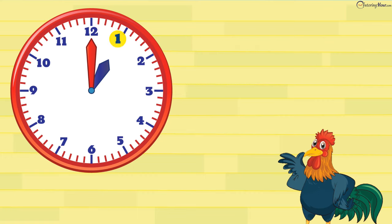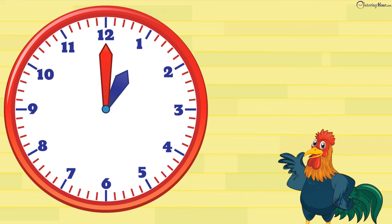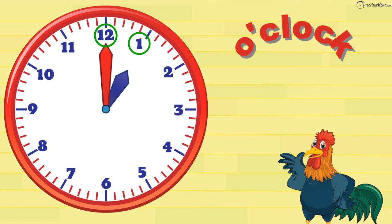An analog clock is marked with numbers 1 through 12. Let's take a closer look at our clock face. The hour hand is pointing to 1, and the minute hand is pointing to 12. When the minute hand is pointing to 12, you need to say o'clock. So we say, it is 1 o'clock.